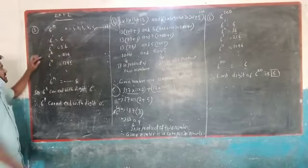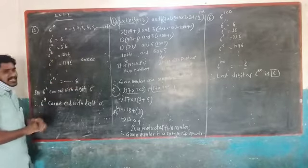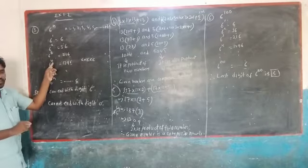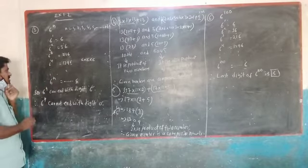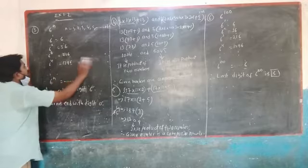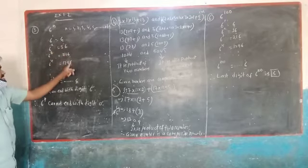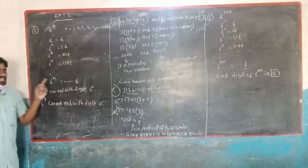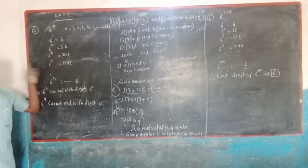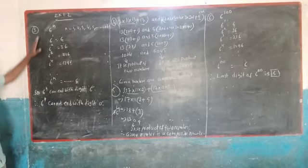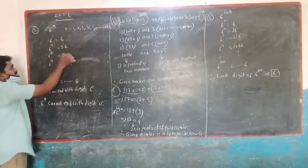6 cubed is 6 into 6 into 6, that is 216. Now 6^4 is equal to 1296. So here the last digit of all these values is 6, 6, 6, and 6. So the last digit of 6^N is always 6.